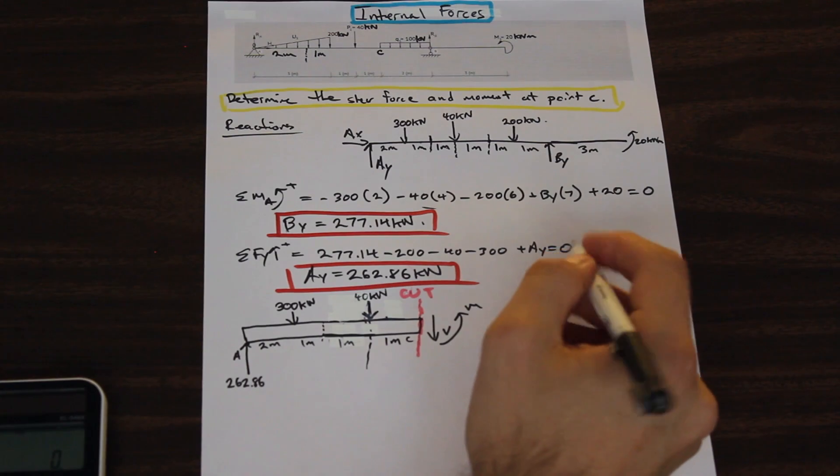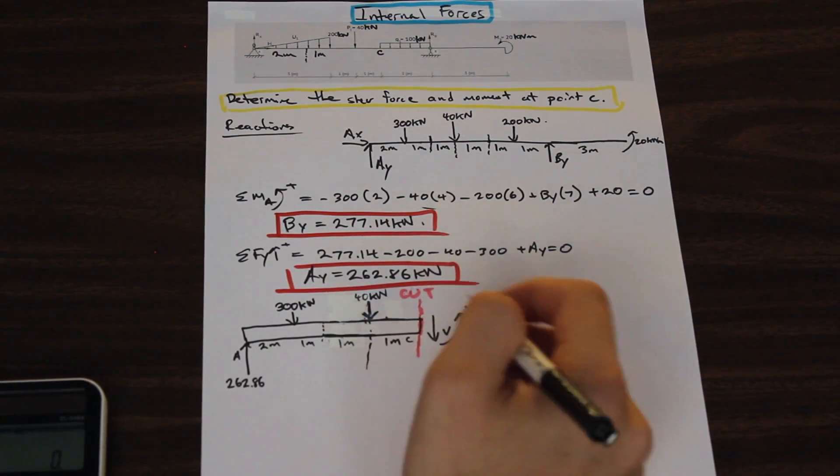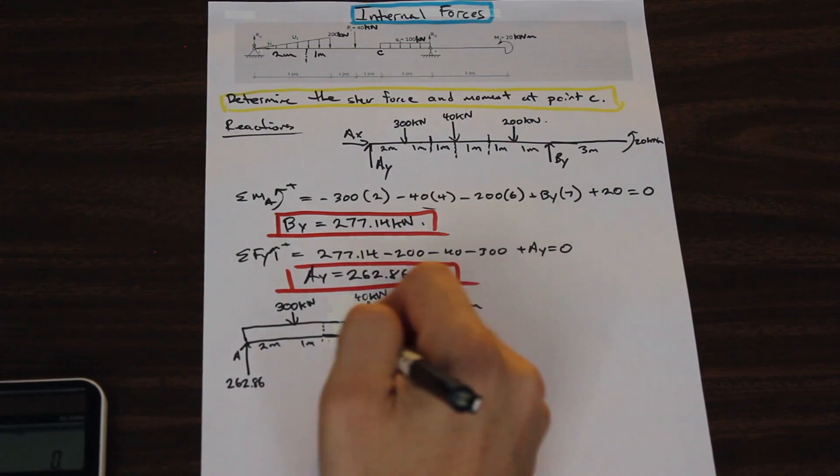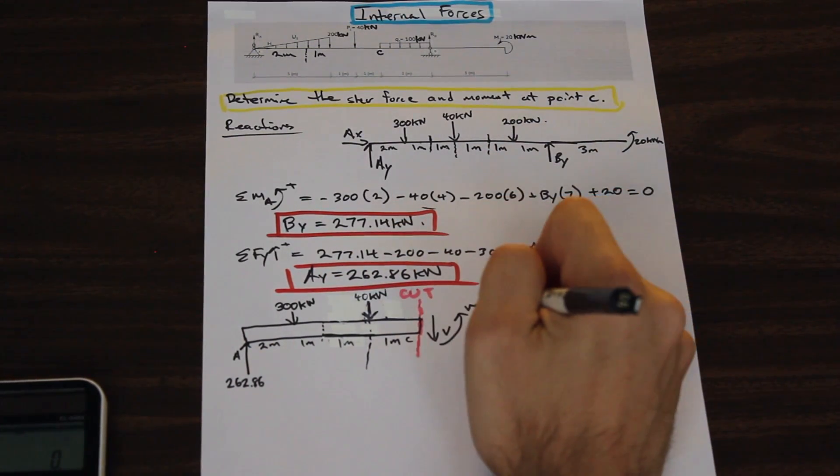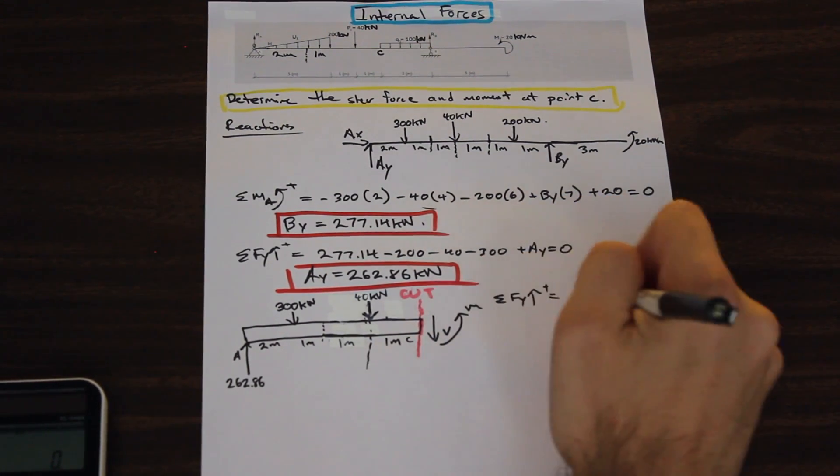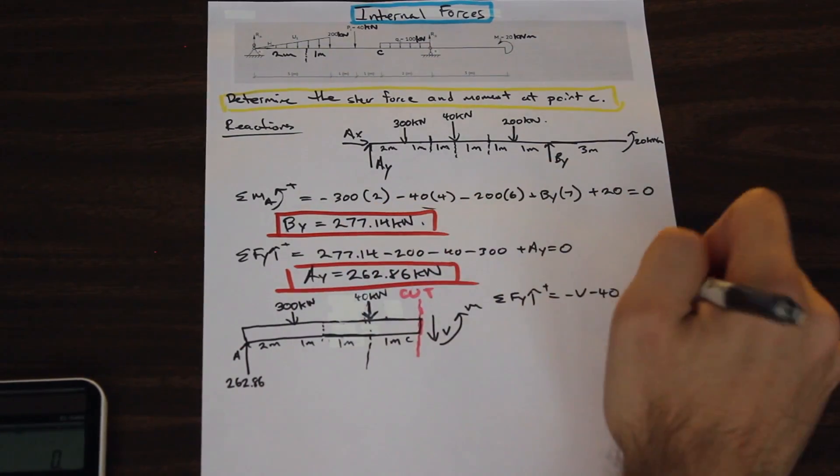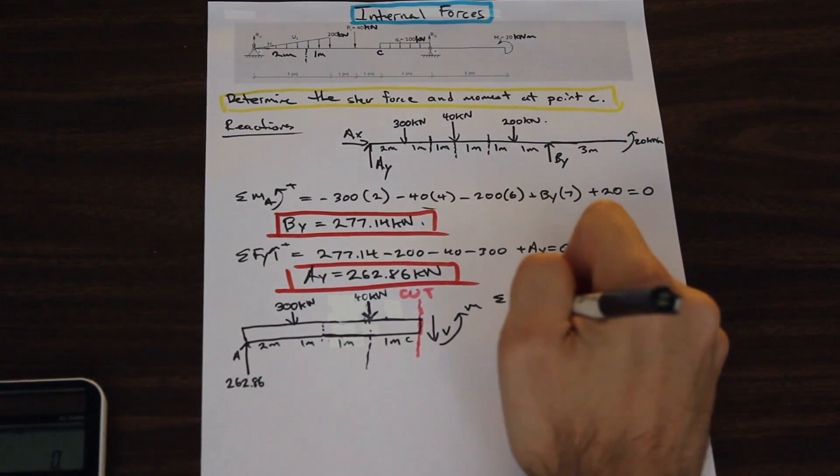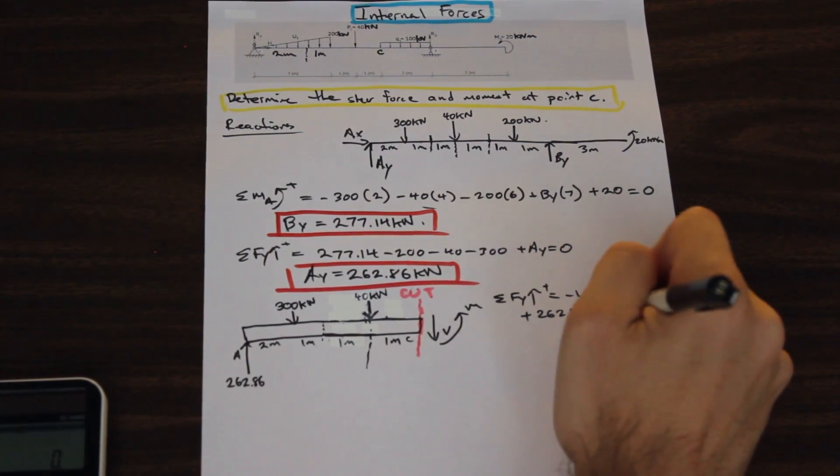Okay, cool. So let's solve for the shear and the moment at that point. All we need to do is, from this point here, we just need to evaluate the shear, and that's not dependent on distance. So we can say the forces in the y direction are equal to negative shear, negative 40 acting downwards, negative 300, and positive 262.86, equals 0.